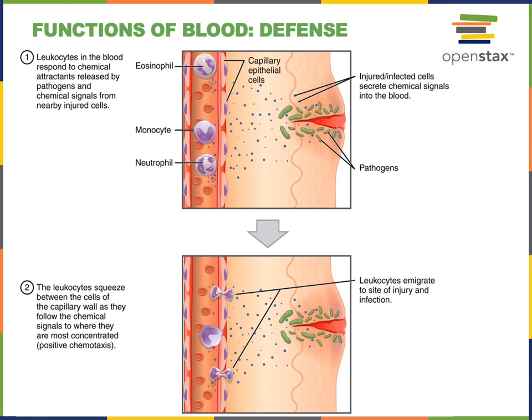Defense is another major function of the blood. In particular, the leukocytes — the white blood cells — are responsible for defending against infection. Leukocytes can leave the blood and migrate into other tissues in a process called emigration or diapedesis. The leukocytes move out of the blood and into another tissue in order to help defend against infection, such as in a wound.